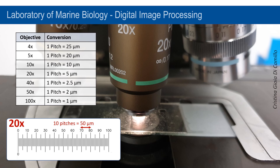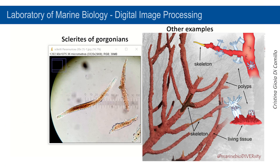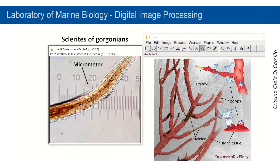When you take pictures under a light microscope, include an ocular micrometer in your photos to obtain a scale bar. Remember to take note of the power of the selected objective lens to know the corresponding length of micrometer pitches. For example, the length of a single micrometer pitch at 20x objective is 5 micrometers; therefore, 10 pitches measure 50 micrometers. In this example, we will measure the length of sclerites, which are skeletal elements of gorgonians made of calcium carbonate.